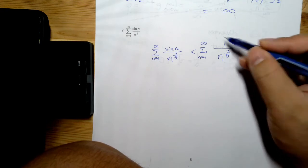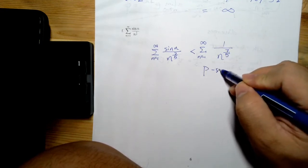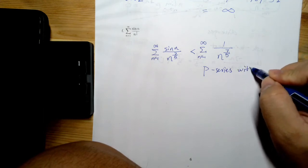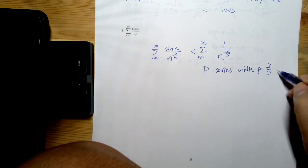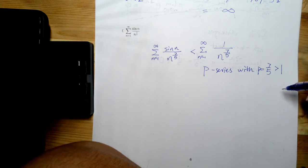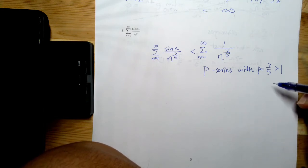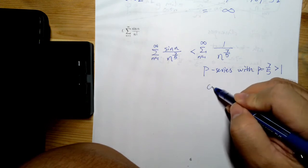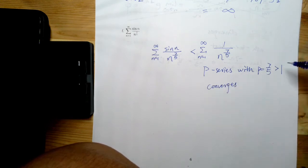Regarding this, it is actually a P-series with P equals 7/5, which is greater than 1. We know that for a P-series, as long as P is greater than 1, the series converges.